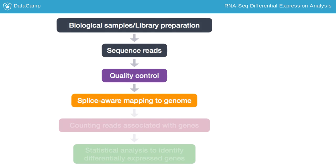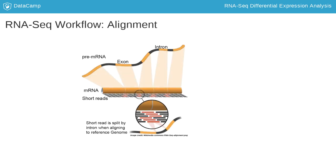The next step is alignment, or mapping to the genome, to determine the location on the genome where the reads originated. Since mRNA contains only the exons needed to create the proteins, when the mRNA is aligned to the genome containing introns, some of the reads will be split across introns. Therefore, tools for aligning reads to the genome need to align across introns for RNA-Seq.